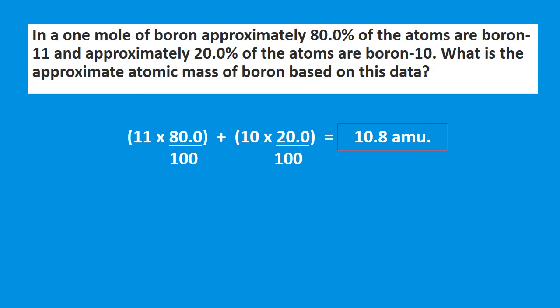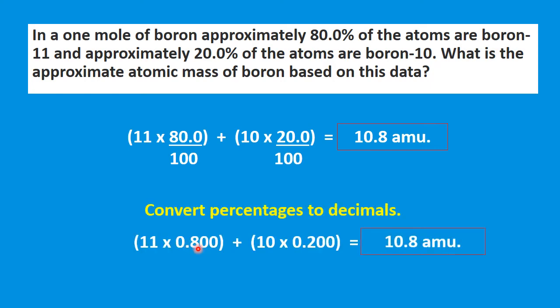Now that we understand percentages are out of 100, we can decimalize our percentages — that is, convert them to decimal form. Since we're dividing by 100, 80 divided by 100 is 0.8 and 20 divided by 100 is 0.2. Whatever percentage we have, we divide by 100 to convert it to a decimal, and we still end up with the same answer of 10.8 atomic mass units.